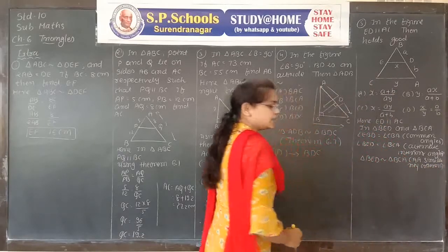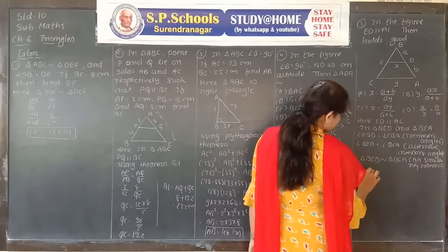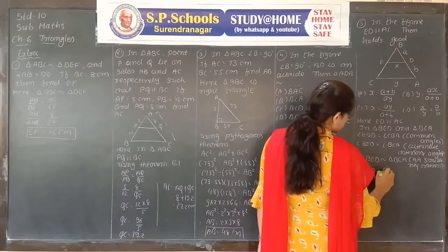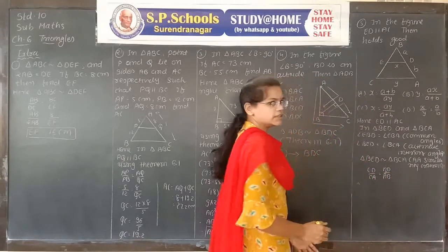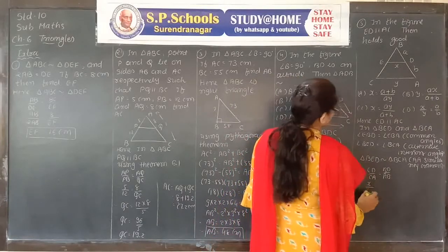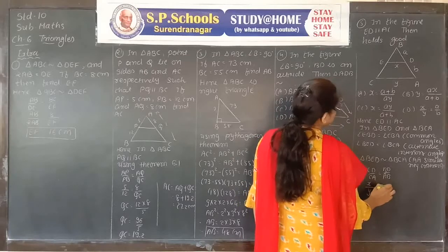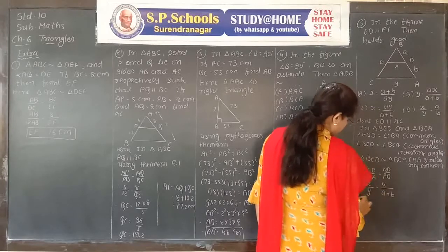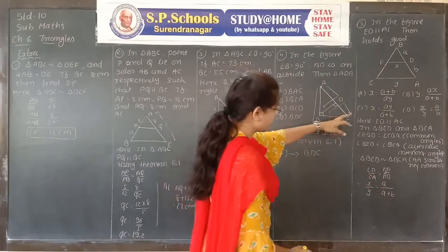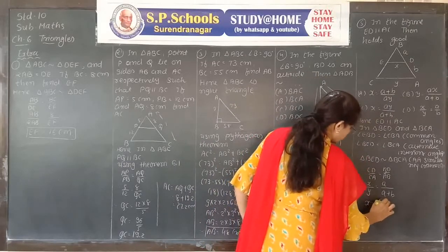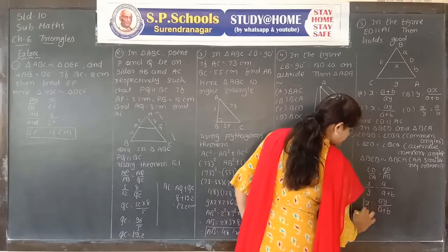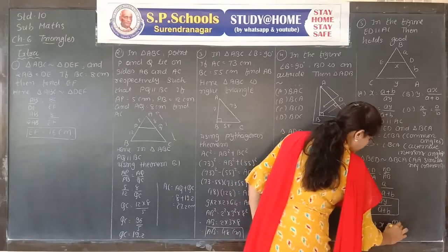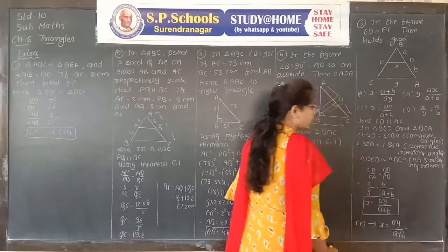Now taking the ratios of corresponding sides: ED/CA = BD/AB. Substituting ED = x, CA = y, BD = a, AB = a + b. So x/y = a/(a + b). Making x the subject: x = ay/(a + b). This is option C, which is the correct answer.